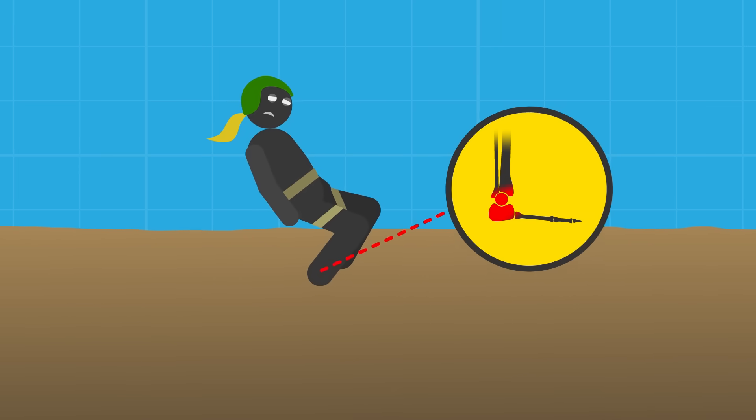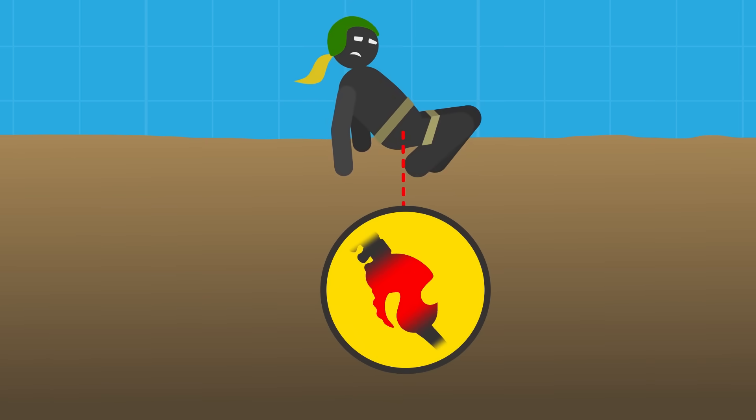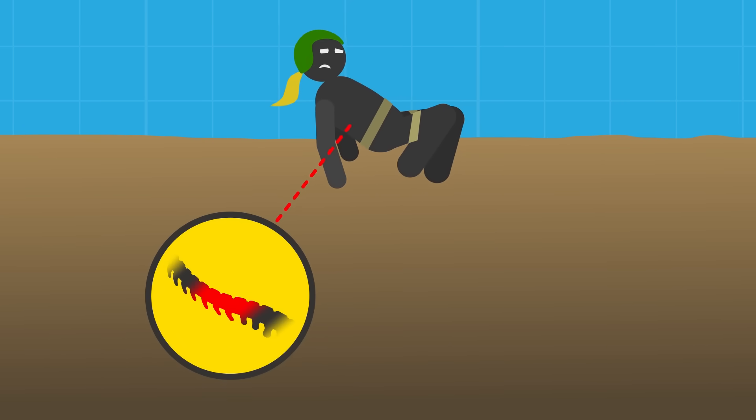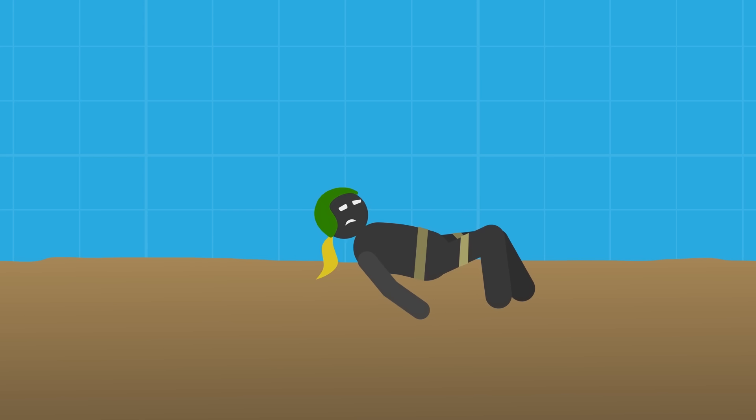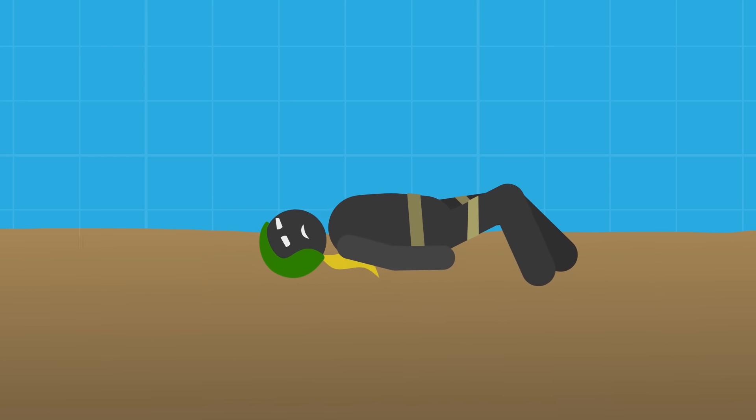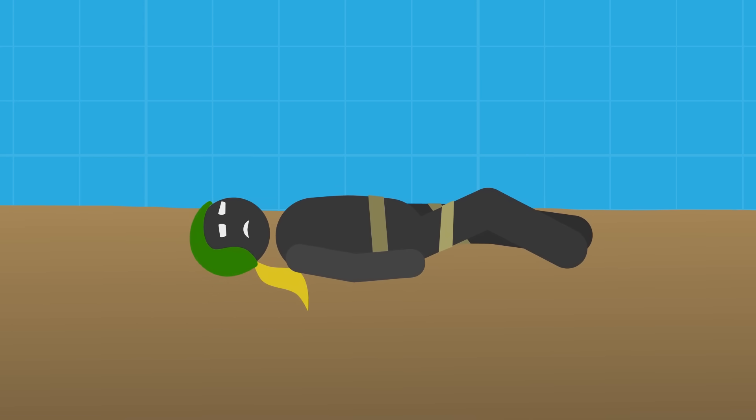Much of the academic discussion of the incident focused on the position and orientation of her body upon impact, crediting her survival to landing feet first. This spread the force of the impact over a longer period of time, across a larger area, and concentrated much of the force on less essential body parts.